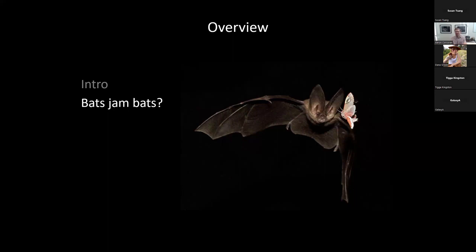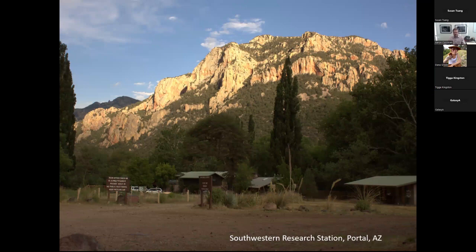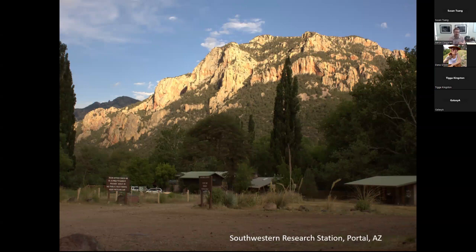So we went out to the fields to figure out a way of putting out cameras and equipment to study animals in the natural environment. This was done at the Southwestern Research Station, a place I've now gone to 15 or so times over the last couple of decades. Over the summer in North America, they have a high diversity and abundance of both bats and insects — it's really an ideal kind of field laboratory for studying these kinds of interactions.